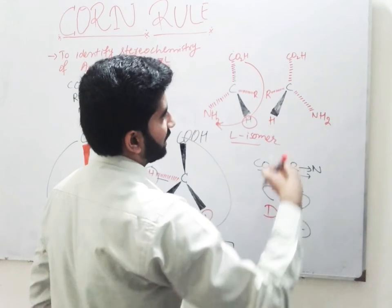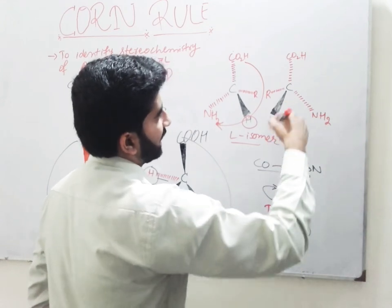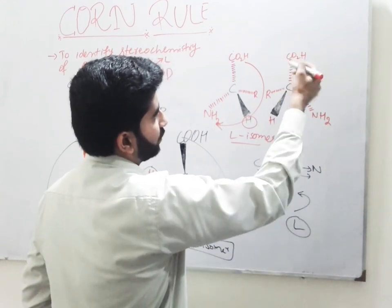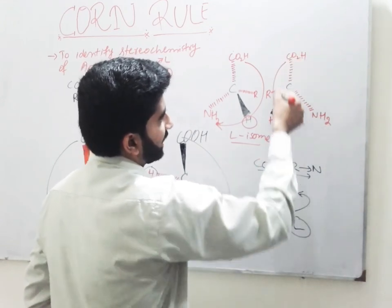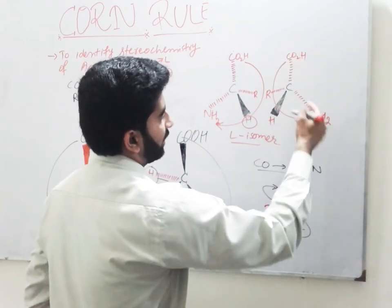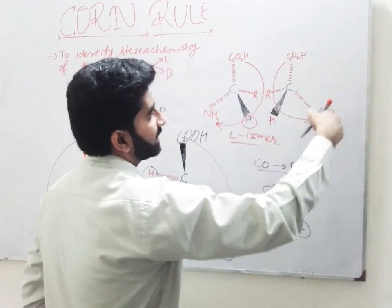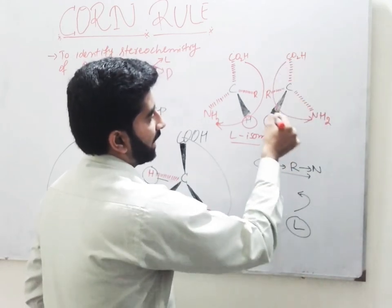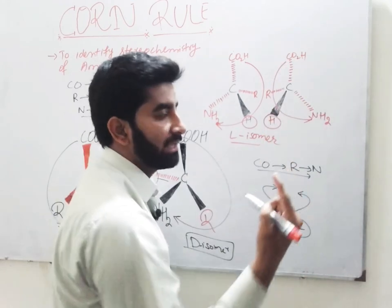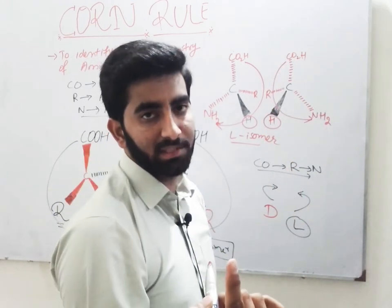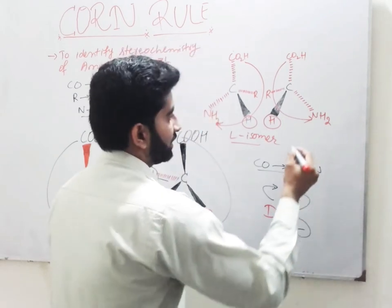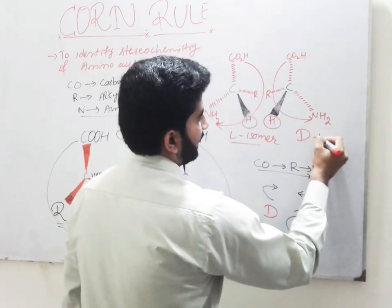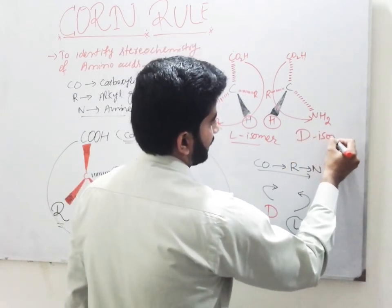In this molecule, if we do rotation in the direction of CON, the direction is anticlockwise and our hydrogen is directed towards the observer. So we assign it as D isomer.